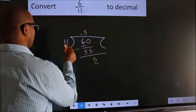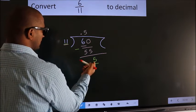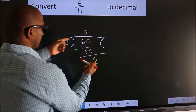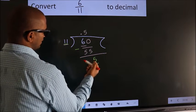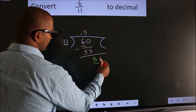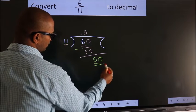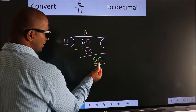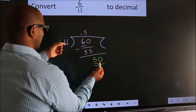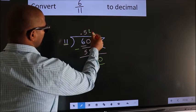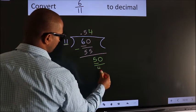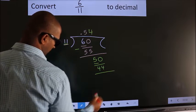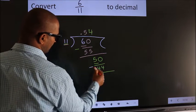We have 5 here, and 11. 5 is smaller than 11. We already have the decimal, so this time we can directly take 0 to make 50. A number close to 50 in the 11 table is 11 times 4, which is 44. Now we subtract and get 6.